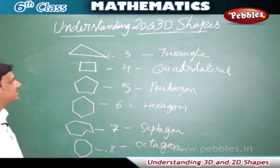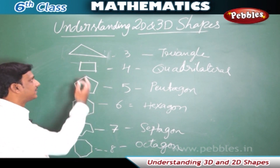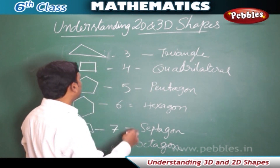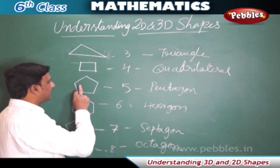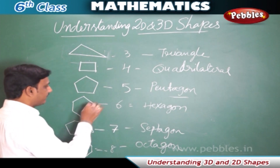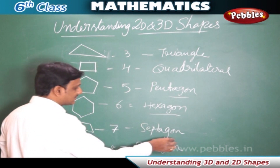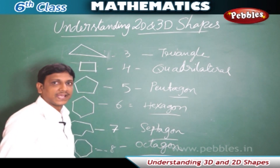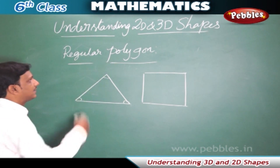To summarize, polygons are named based on their number of sides: 3 sides is a triangle, 4 sides is a quadrilateral, 5 sides is a pentagon, 6 sides is a hexagon, 7 sides is a heptagon, and 8 sides is an octagon. Now let us understand what a regular polygon is.